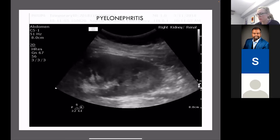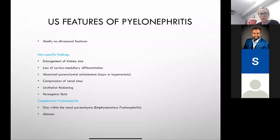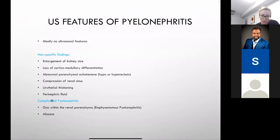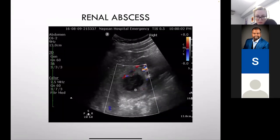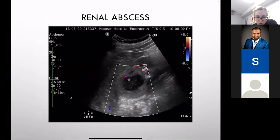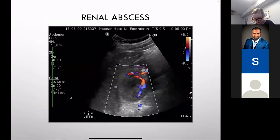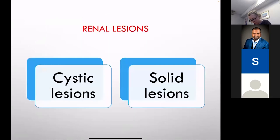In pyelonephritis, ultrasound changes are very subtle — mostly no ultrasound features whatsoever. What you might see is an enlarged kidney on the affected side, some loss of corticomedullary differentiation, and possibly a few hyper- or hypoechoic patchy changes. Urothelial thickening is in textbooks but rarely seen. What we actually use ultrasound for in pyelonephritis is to look for complications — like emphysematous pyelonephritis or abscess formation. One such example shows a heterogeneous, almost anechoic structure on the superior pole of the right kidney with surrounding inflammatory changes and vascularity — a complicated pyelonephritis that needs drainage.